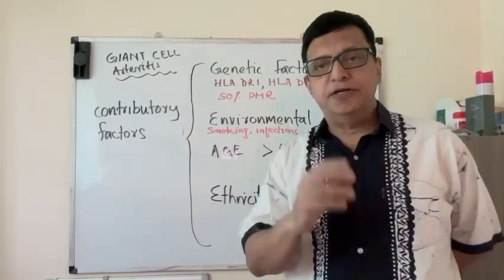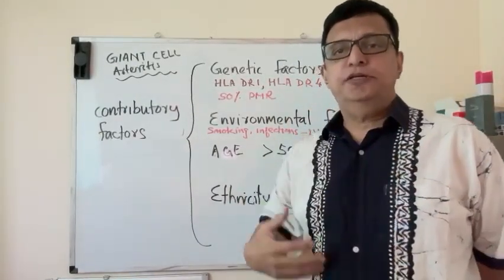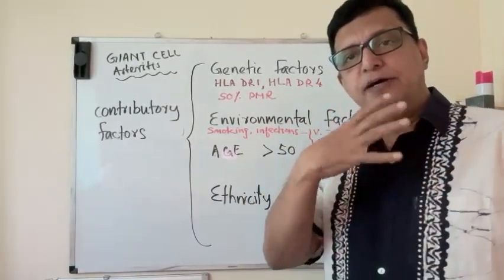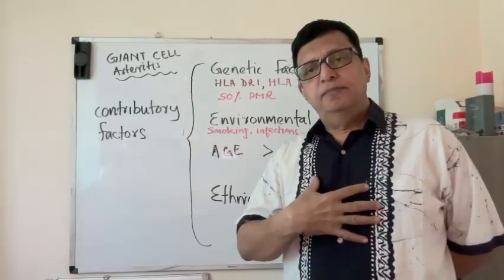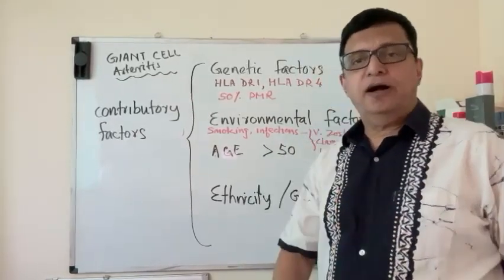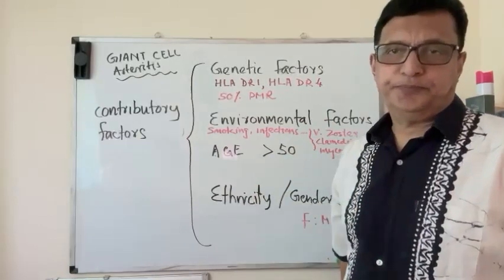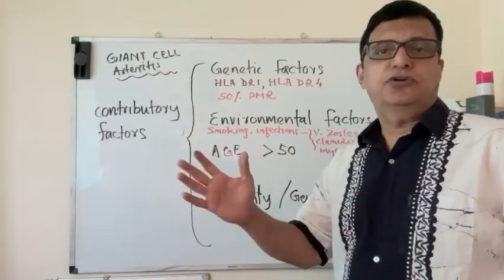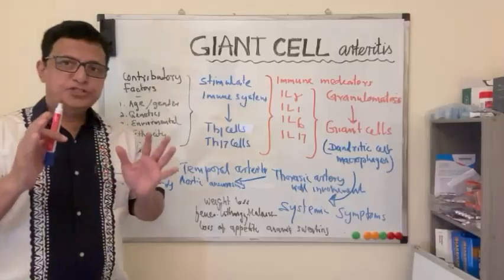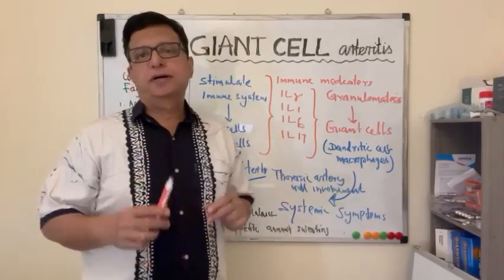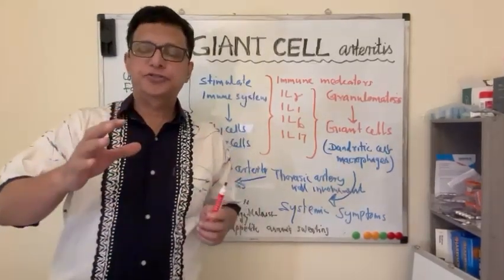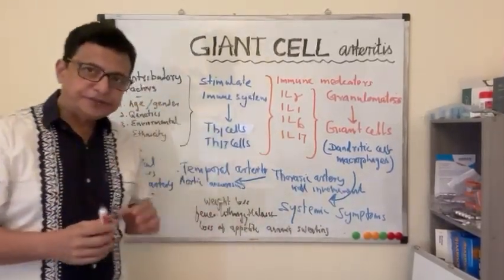Giant Cell Arteritis affects mostly the thoracic arteries and above. Below that, the major arteries are less affected. The reason is not known. Let's see how this autoimmune reaction triggers off.